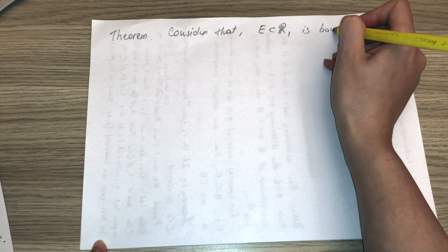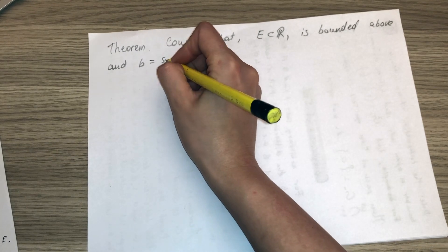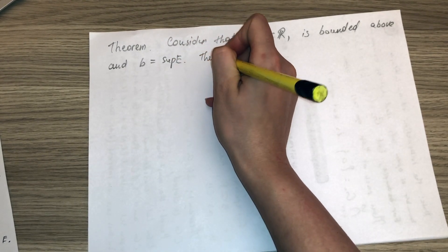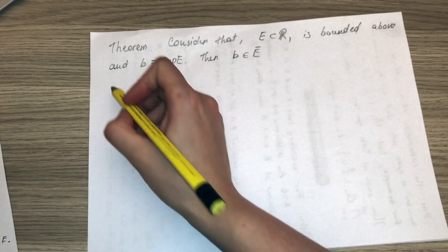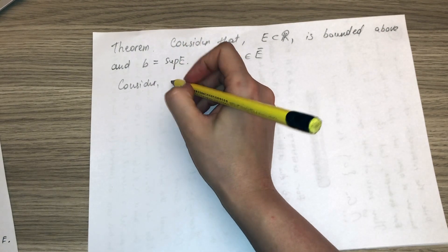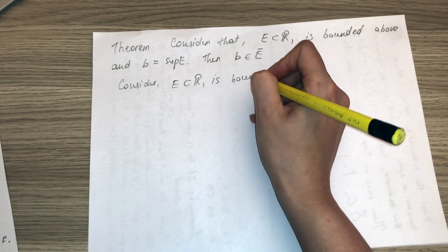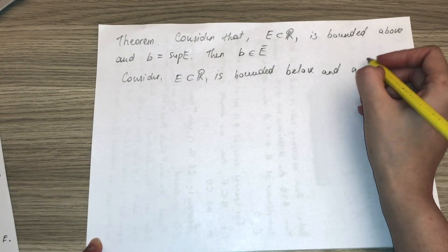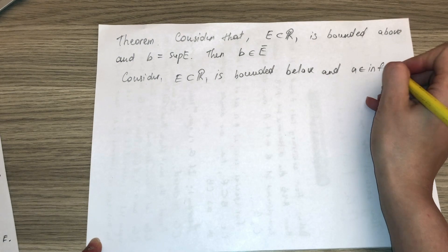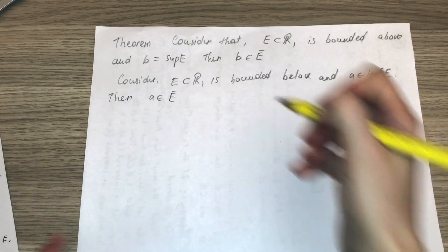Consider that E is a subset of R and is bounded above, and B is the supremum of E. Then it is obvious that B is from the closure of E. Similarly, if E is a subset of R and is bounded below, and A is the infimum of E, then A is from the closure of E.